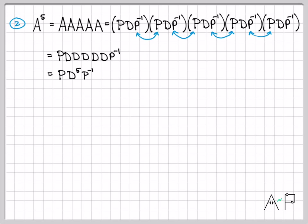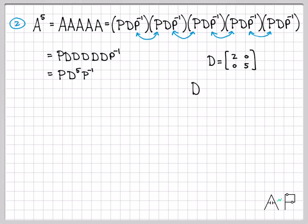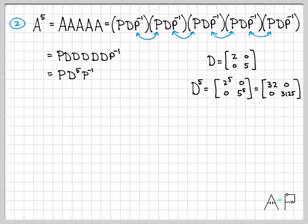So if we use the diagonalization representation, we're left with P times D to the fifth times P inverse. That's a much simpler expression. Because D is a diagonal matrix, computing it raised to a power is very easy — you just raise each diagonal element to the appropriate power. Since we're raising to the fifth power, D to the fifth means raising 2 to the fifth and 5 to the fifth. Two to the fifth is 32, and five to the fifth is 3125. So now we know what D to the fifth is.